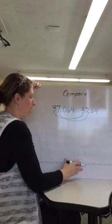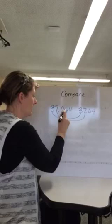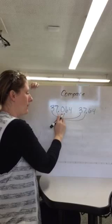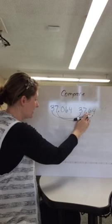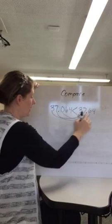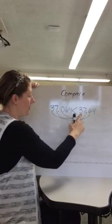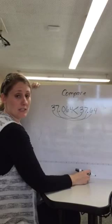Then I'm going to go to my tenths place. I go place value by place value because this is the one that's worth the next biggest amount. So we have a 0 in our tenths place and we have a 6 in our tenths place. Well I know that 6 tenths is worth more than 0 tenths so I know that this is the bigger number. 37 and 64 thousandths is less than 37 and 64 hundredths.